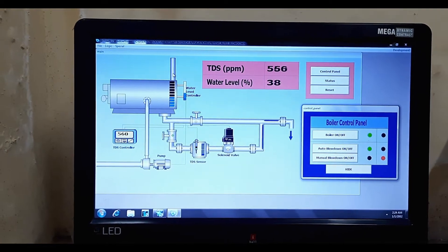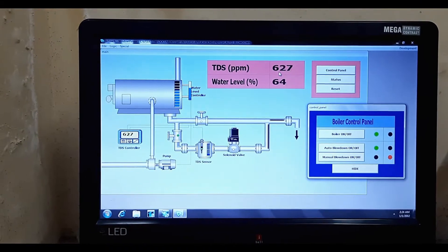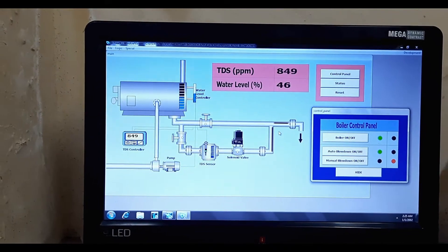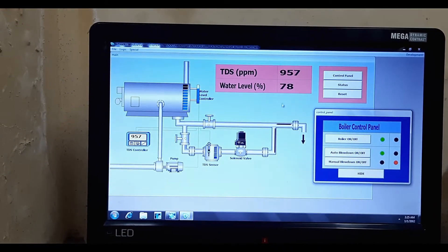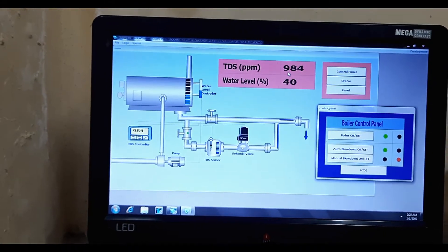So now as you can see, like when it turned 500, the system turned off. TDS increased. Now the TDS is increasing and you can see that as it became thousand, this has again turned on.